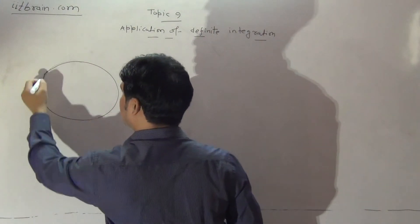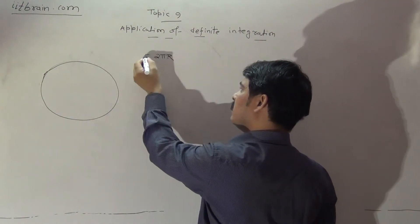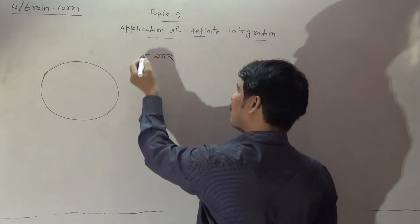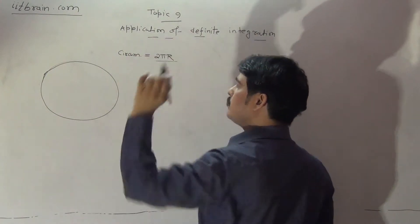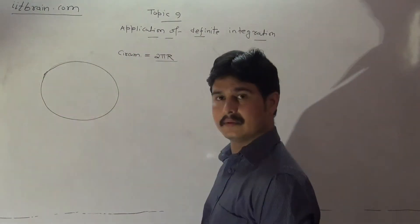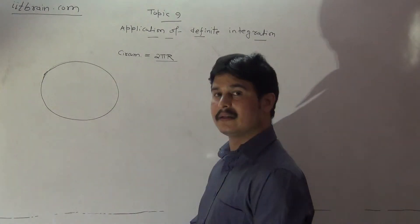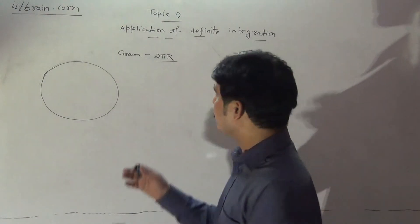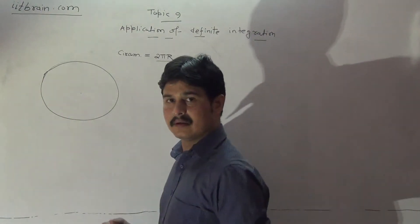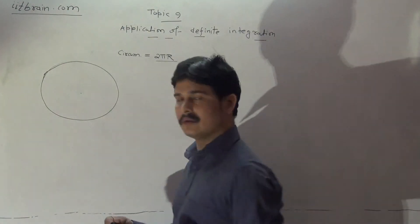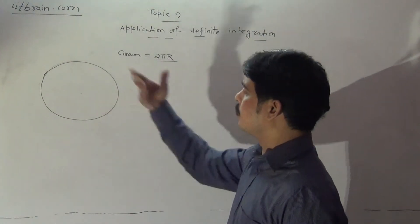The circumference of a circle is 2πr — a formula we know from earlier classes. It is the total circumference of a circle, taught in 10th standard, but never derived there. By using definite integration, we can understand why it is 2πr and derive this result.